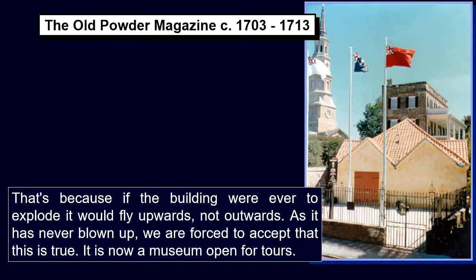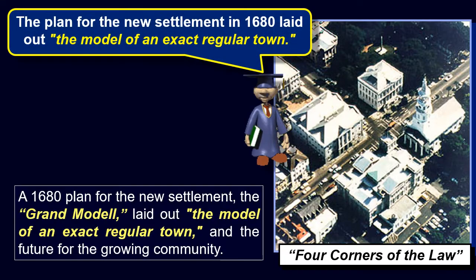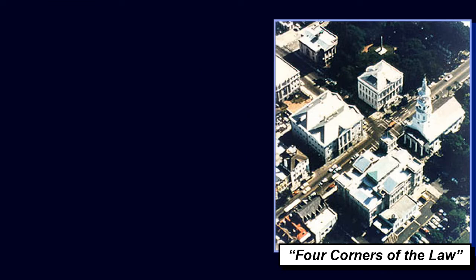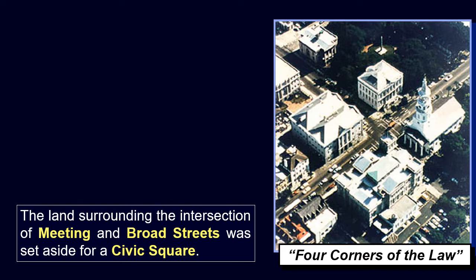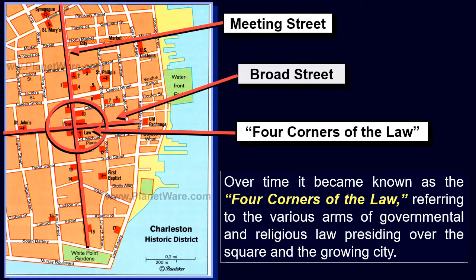A 1680 plan for the new settlement, the Grand Modale, laid out the model of an exact regular town and the future for the growing community. The land surrounding the intersection of Meeting and Broad Streets was set aside for a civic square. Over time it became known as the Four Corners of the Law, referring to the various arms of governmental and religious law presiding over the square and the growing city.